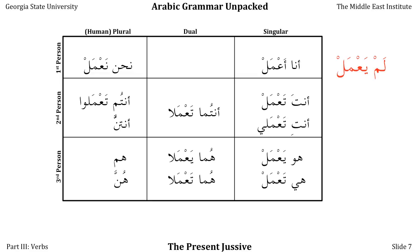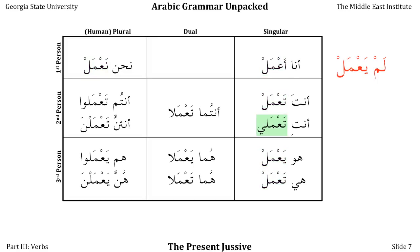The أنتم form loses its nūn and is replaced with silent alif, just like in the manṣūb. The female human plural 'you' form doesn't change in any of the three forms of the present tense. The هم form loses its nūn and is replaced by silent alif, again exactly as in the manṣūb. The هنّ form doesn't change in any of the three forms of the present tense. The dual forms lose their nūn. To recap: the أنا, أنتَ, هو, هي, and نحن forms all have their ḍamma or fatḥa replaced by sukūn. The أنتِ, أنتم, and هم forms all lose their nūns, and the last two have them replaced by silent alif because we can't end a conjugation with a long vowel wāw. The dual forms lose their nūn, and the human female plural forms don't change in any of the three versions.